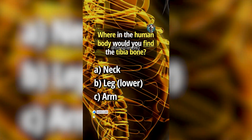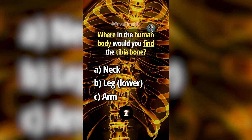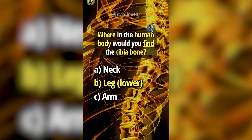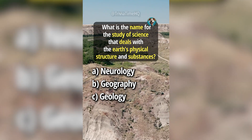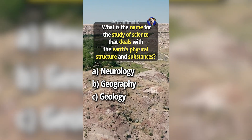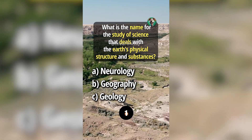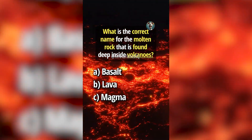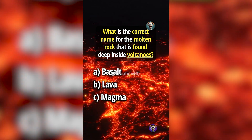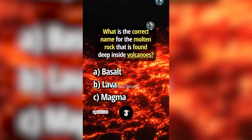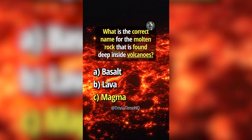Where in the human body would you find the tibia bone? Answer B, leg. What is the name for the study of science that deals with the Earth's physical structure and substances? Answer C, geology. What is the correct name for the molten rock that is found deep inside volcanoes? Answer C, magma.